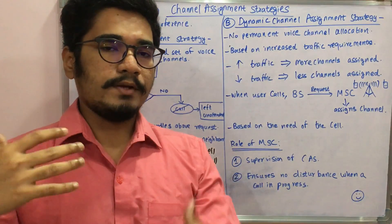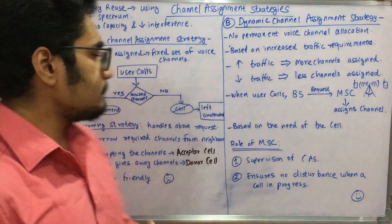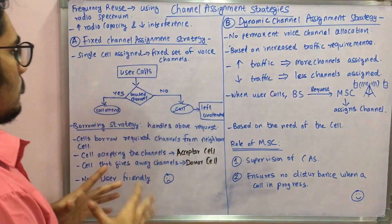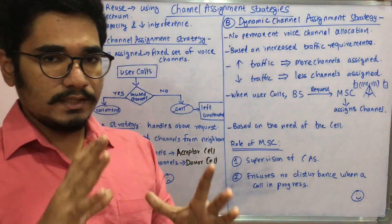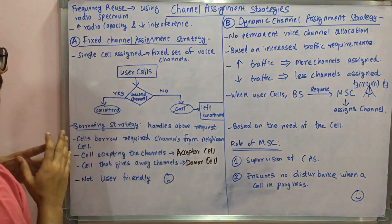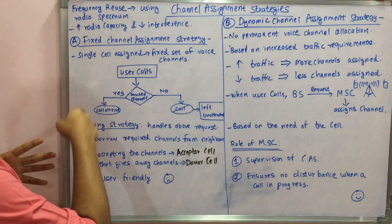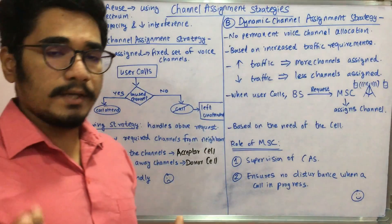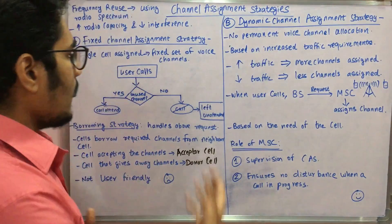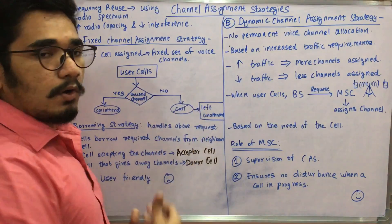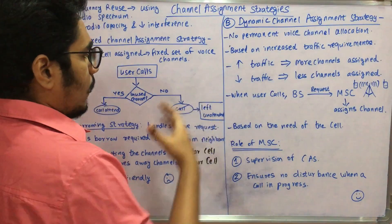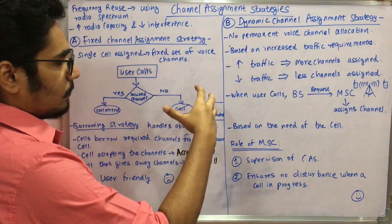Whenever a call is made, it is routed through the system, which checks whether the assigned channel is unused. If it is unused, the call is connected to the other user. If no channel is available, the call is blocked and left unattended.